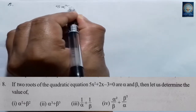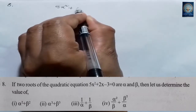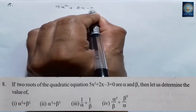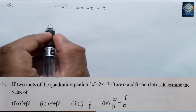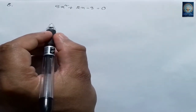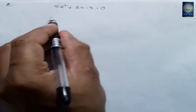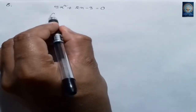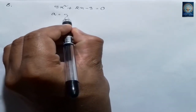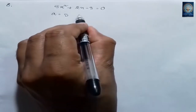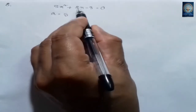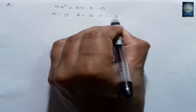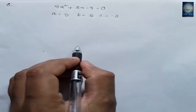The equation is 5x² + 2x - 3 = 0. Comparing with the standard form, we identify: a = 5, b = 2, and c = -3.